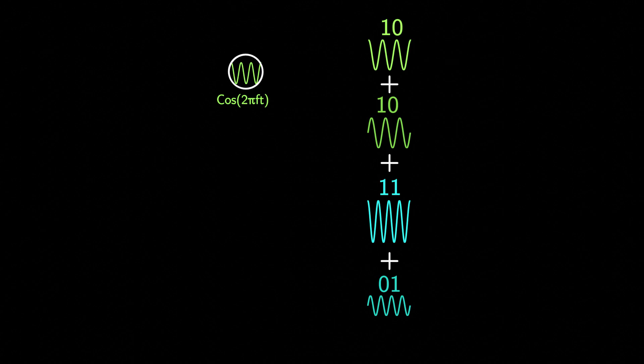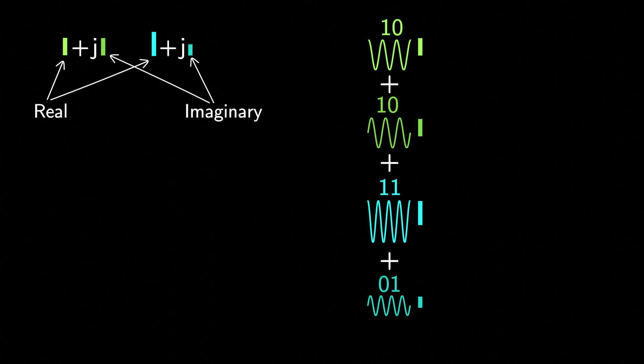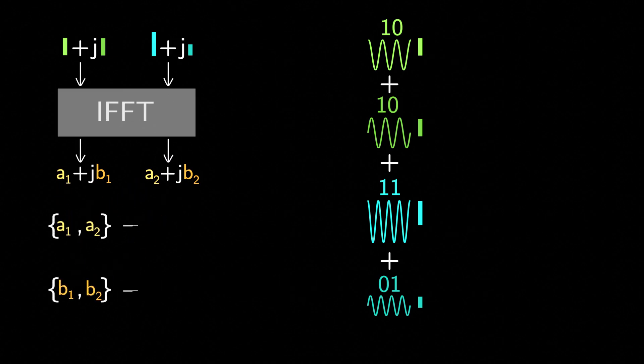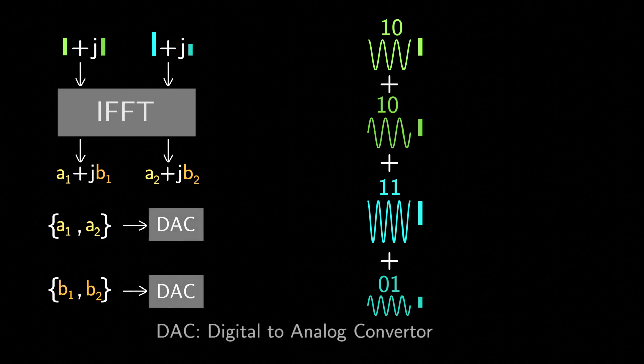I will show you how OFDM is implemented, without diving into the details of why this implementation works. Here's the process. First, we take our data amplitudes for the cos and sine waves, and represent them as complex numbers. With cos component as real part, and sine component as imaginary part. Then, we perform an IFFT on these complex numbers, which also results in complex numbers. Next, we separate the real and imaginary parts. Convert them to analog signals by using digital to analog converters.